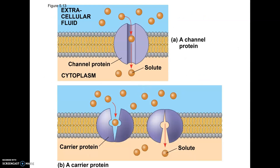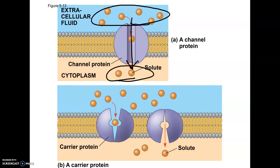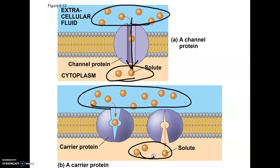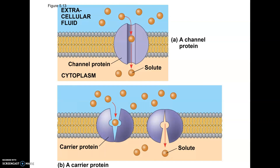You could also be asked to identify facilitated diffusion from a picture. Notice high concentration here, low concentration here, through a protein — that would be facilitated. A carrier where the protein changes shape would still be facilitated diffusion. If it just showed molecules going through the membrane directly, that would be simple diffusion. And if it was going from low to high, that would be active transport.